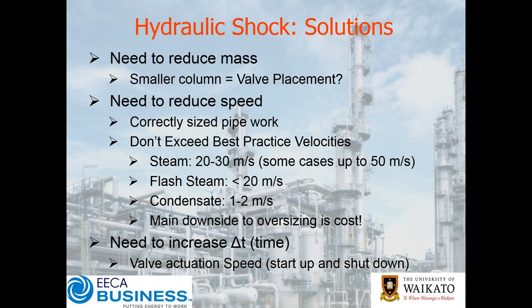An important thought to keep repeating as a mantra: when you size your condensate system pipe work, you obviously size it based on the expected duty. But think about what happens when something upstream fails — what is then in that pipe work and what will be the consequence? You might think, well, if a steam trap fails I'll fix it. For those of you running a factory, plant needs to keep running — they're not going to stop everything just so you can have a window to fix a steam trap. So you need to think about how much resilience your system needs, based on how many steam traps could potentially fail before you're able to have a window to fix them.